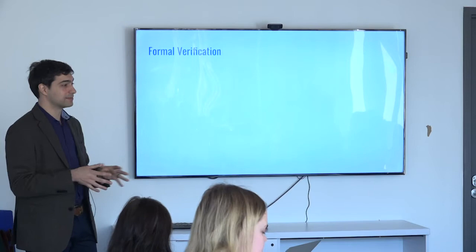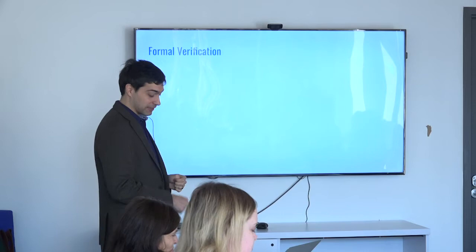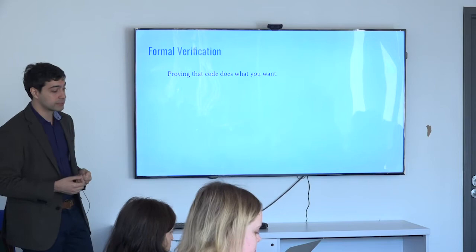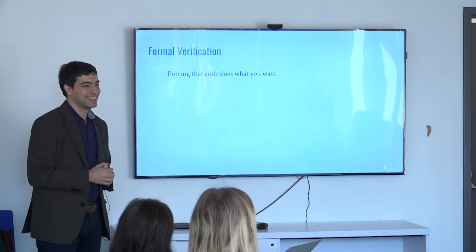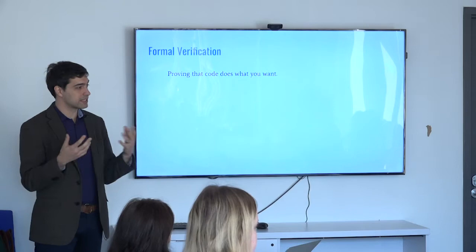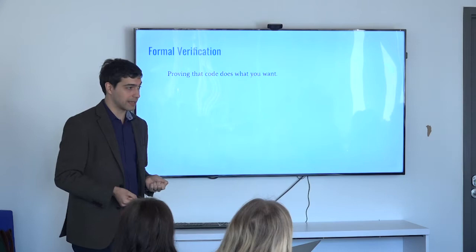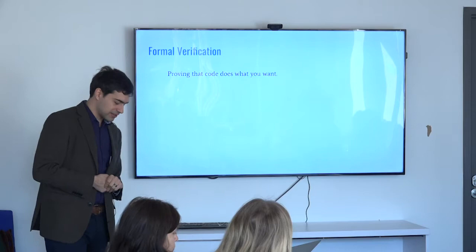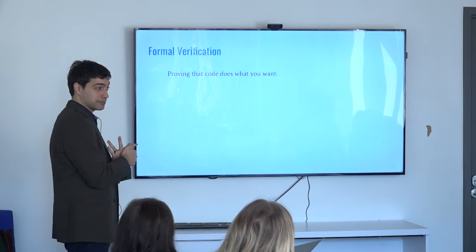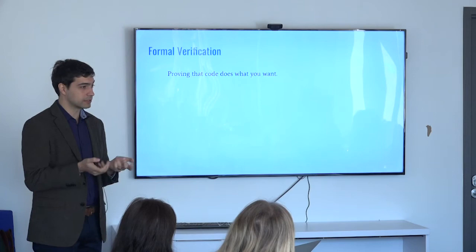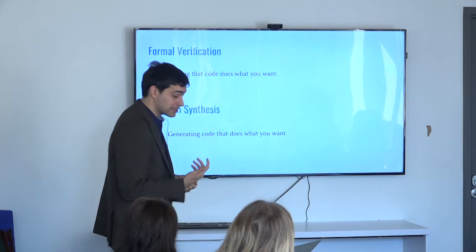This is the field of formal verification. I'll give you the ten-second overview. Formal verification is the field of proving that code does what you want. The basic idea is that you specify some behavior of your code, you write some code, and then you check to make sure your code actually implements that behavior. But you might think: you're making me write my code, and then on top of that also specify what my code was supposed to do — why do I have to do this twice? And this is where program synthesis comes in.